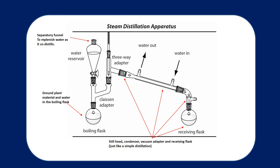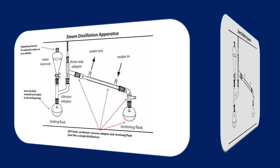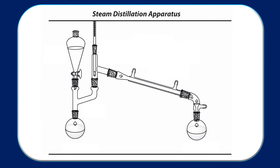The apparatus we use to obtain this material is known as a steam still or steam distillation apparatus. It is very similar to that used for a simple distillation, but with one very important change. There's a boiling flask as usual, but that boiling flask is split by a Claisen adapter. One of the two ports generated by the Claisen adapter is attached to a reservoir — in our case, a separatory funnel — which will act as a source of water.